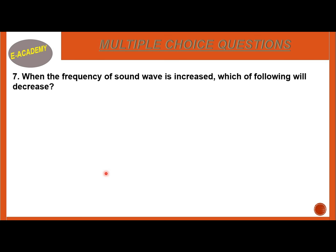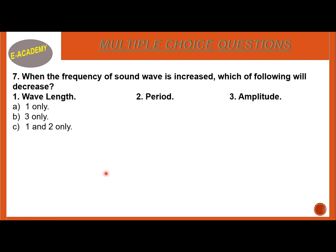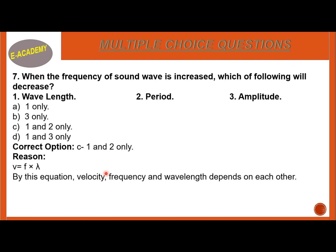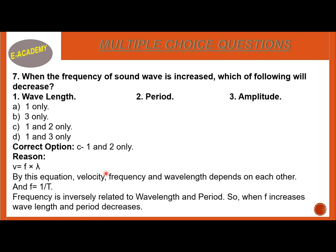Number 7: When the frequency of a sound wave is increased, which of the following will decrease? Wavelength, period, amplitude. Option A: 1 only; B: 3 only; C: 1 and 2 only; D: 1 and 3 only. The correct option is C — 1 and 2 only. Using the equation v = fλ, frequency is inversely related to wavelength and period. When frequency increases, wavelength and period decrease.